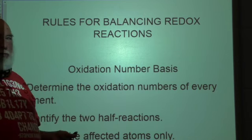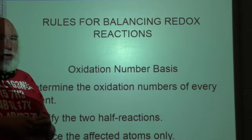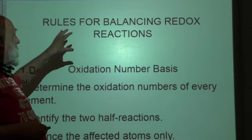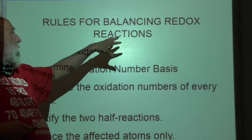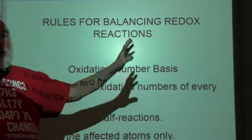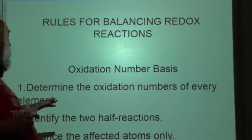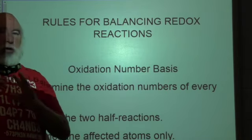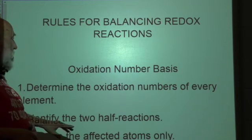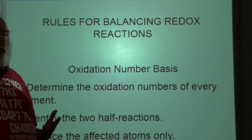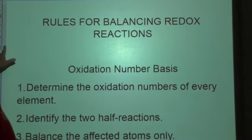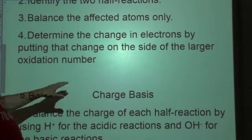Now we're going to expand upon the oxidation numbers that we learned in the last lesson, dealing with balancing redox reactions that are acidic and balancing redox reactions that are basic. There's a certain process we're going to be using, enumerated here in this list. It's divided into two parts: the first part is what we call the oxidation number basis, and the second part is what we call the charge basis.